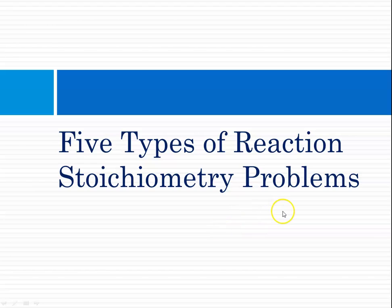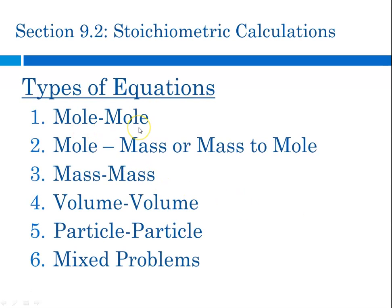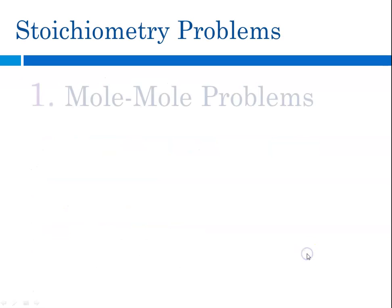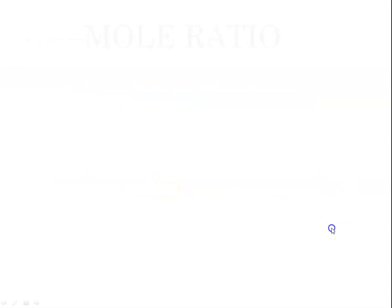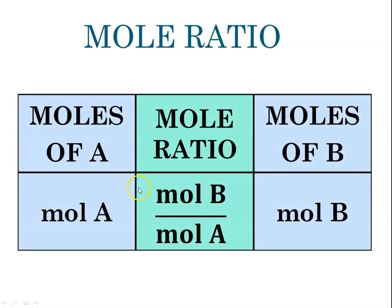There are five types of stoichiometry problems we typically do: mole-to-mole problems using just the coefficients; then using the mole roadmap — mole-to-mass or mass-to-mole, mass-to-mass (grams to grams), volume, particle, and mixed problems. We'll start with the simplest: mole-to-mole problems. You go from moles of what you're given to moles of what you want by multiplying by a mole ratio from the balanced equation, which relates moles of one substance to moles of another.